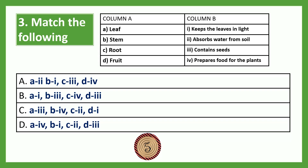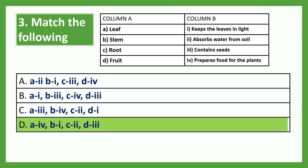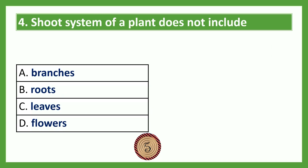Match the following. Column A: leaf, stem, root, fruit. Column B: keeps the leaves in light; absorbs water from soil; contains seeds; prepares food for the plants. The answer is: leaves prepare food for the plants; stem keeps the leaves in light; root absorbs water from the soil; and fruit contains seeds.